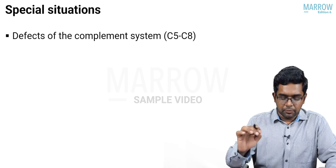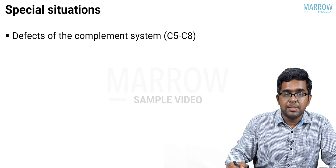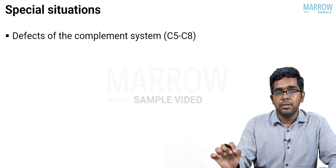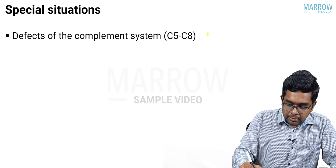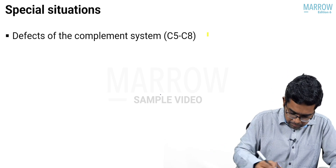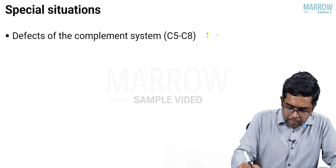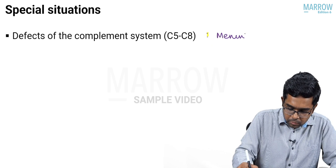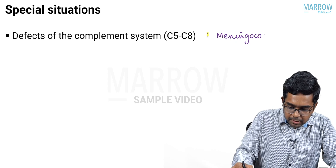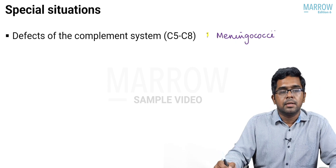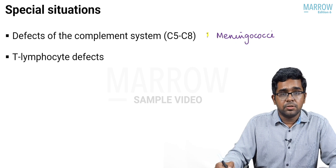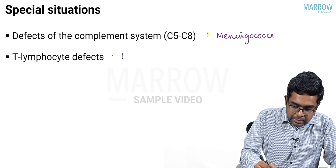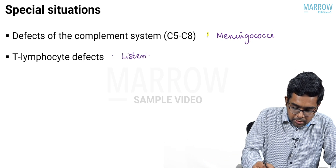There are some special situations where organisms may be slightly different. If a child has a defect in the complement system, especially C5 to C8, the common organism is Meningococci or Neisseria meningitidis. With a T-lymphocyte defect, the common organism is Listeria monocytogenes.